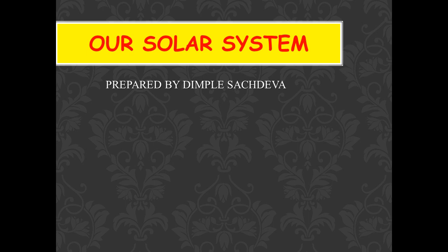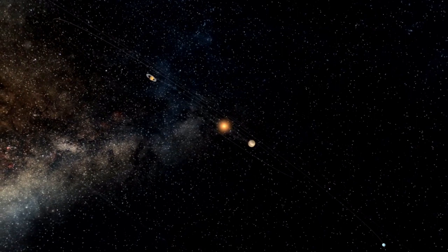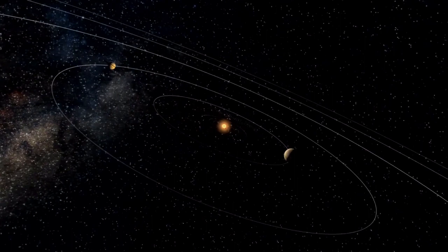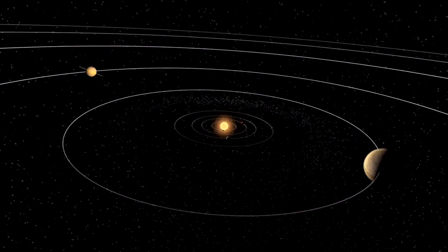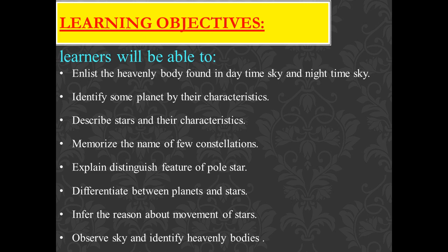Hello students, today we are going to study about our next chapter, our solar system. Our solar system is made up of eight planets and the sun. We live on the planet Earth. Our Earth is one of the eight known planets and is a member of a large family in space. This family of the sun is known as the solar system.